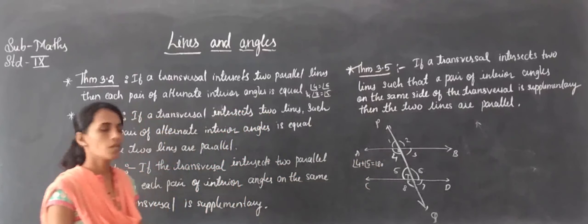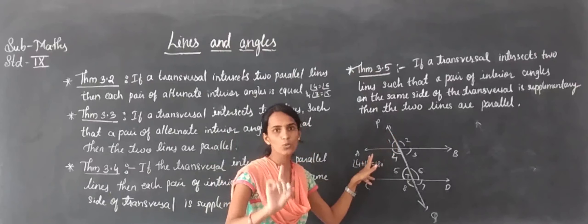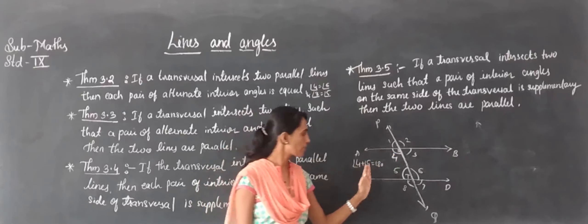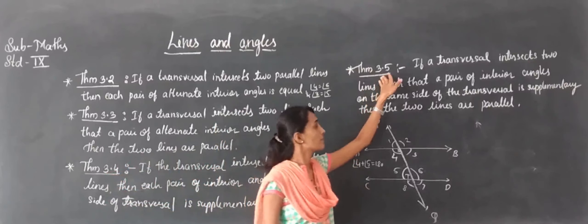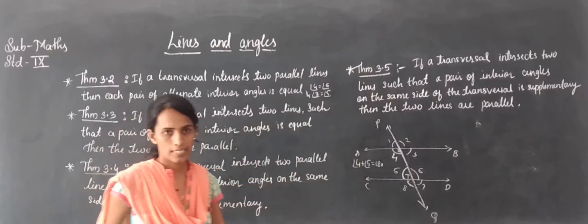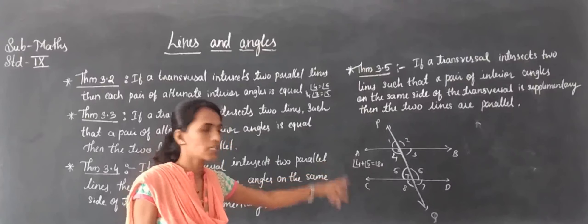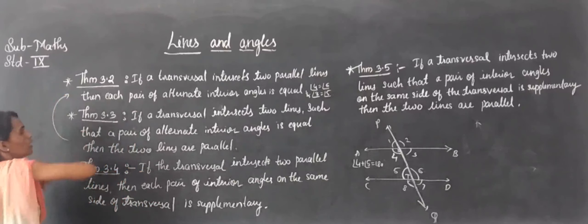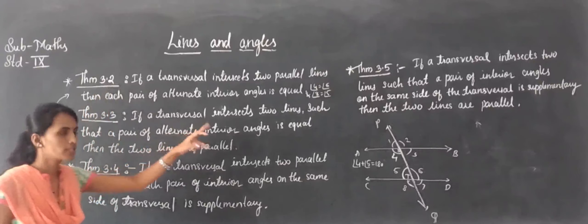Theorem 3.5 is the converse of Theorem 3.4: if a transversal intersects two lines and the sum of interior angles on one side of the transversal is supplementary (180 degrees), then the two lines are parallel. So Theorem 3.3 is converse of 3.2, and Theorem 3.5 is the converse of 3.4.